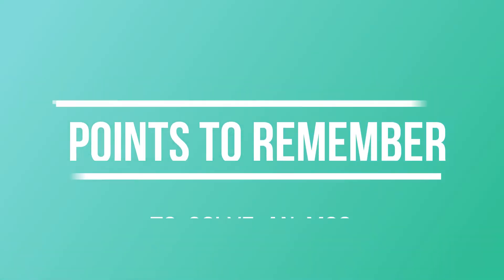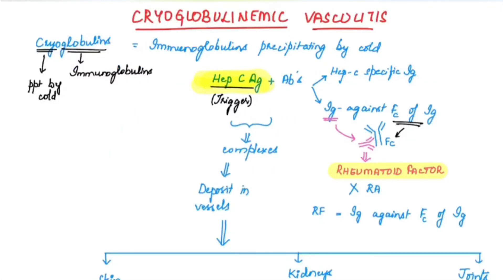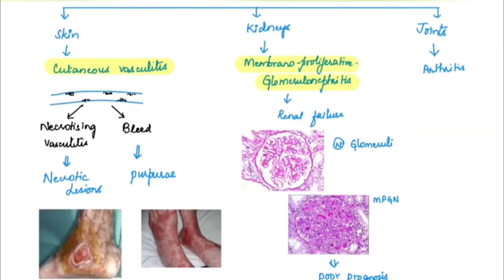Key points to remember for MCQs: there is an association with hepatitis C antigen; there may be a positive rheumatoid factor; there is cutaneous vasculitis with lesions especially on the medial side of the leg; and there is membranoproliferative glomerulonephritis.